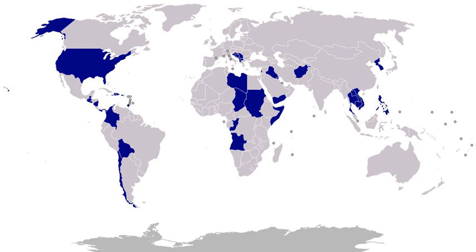1983, Egypt: after a Libyan plane bombed a city in Sudan on March 18, 1983, and Sudan and Egypt appealed for assistance, the United States dispatched an AWACS electronic surveillance plane to Egypt. 1983, Grenada, Operation Urgent Fury: citing the increased threat of Soviet and Cuban influence and noting the development of an international airport following a coup d'état and alignment with the Soviet Union and Cuba, the U.S. invades the island nation of Grenada. 1983–1989, Honduras: in July 1983, the United States undertook a series of exercises in Honduras that some believed might lead to conflict with Nicaragua. On March 25, 1986, unarmed U.S. military helicopters and crewmen ferried Honduran troops to the Nicaraguan border to repel Nicaraguan troops.